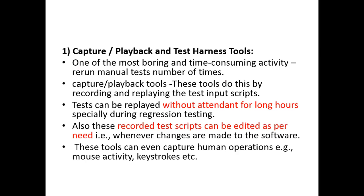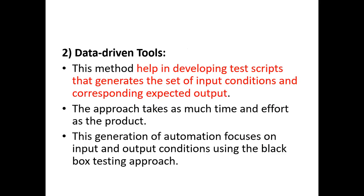The second generation is data-driven tools. This method helps in developing scripts that generate the set of input conditions and corresponding expected output. This approach takes as much time and effort as the product. This generation of automation focuses on input and output conditions using black box testing approaches.